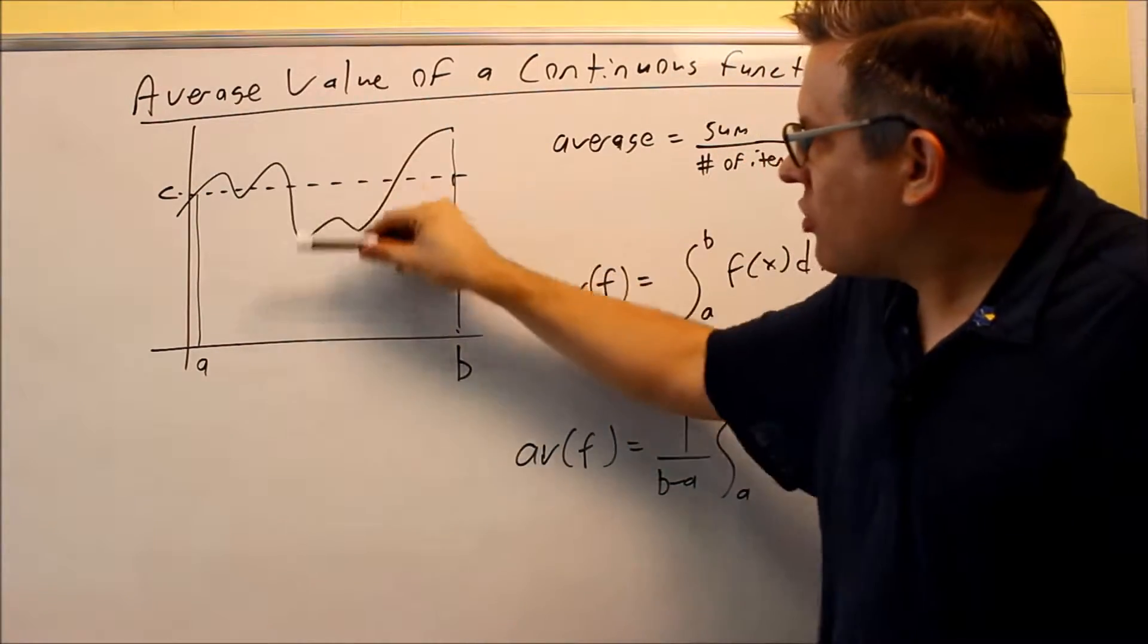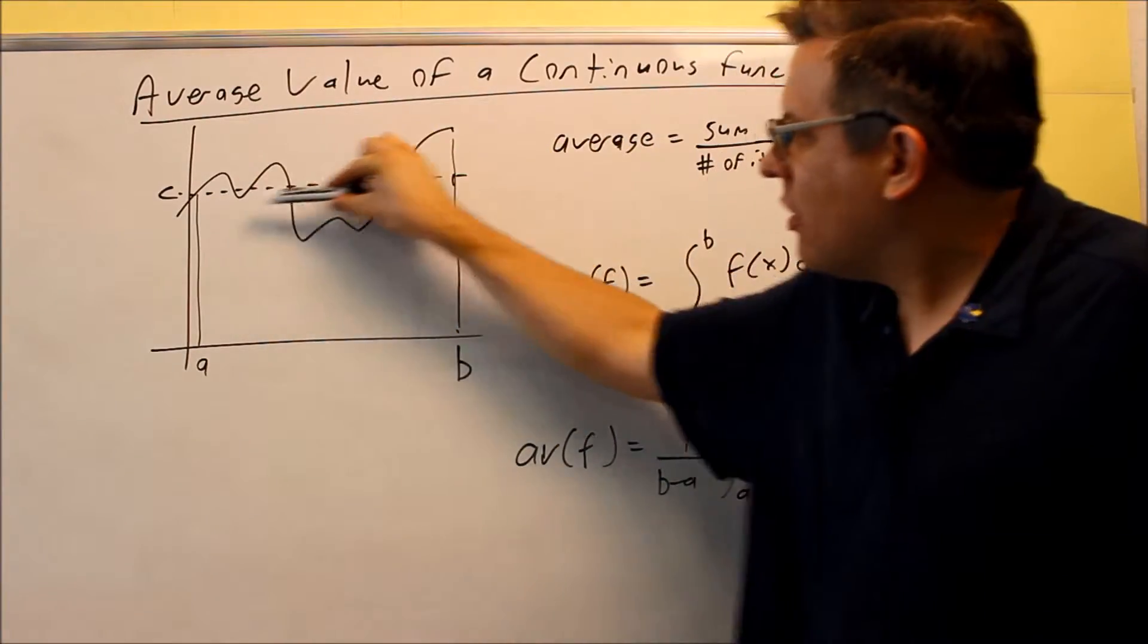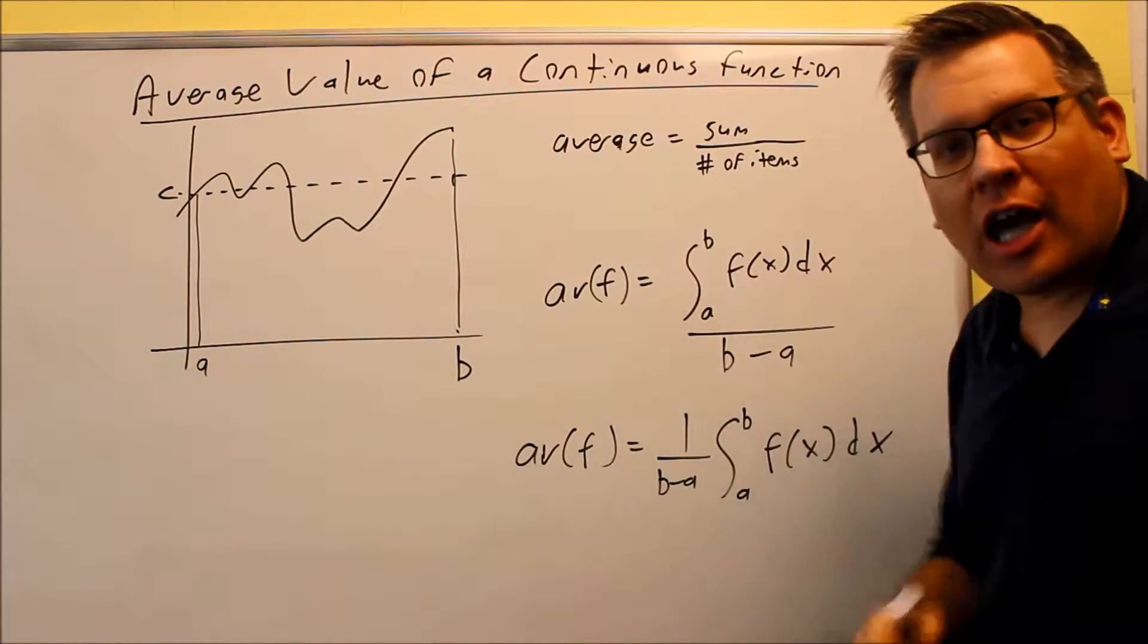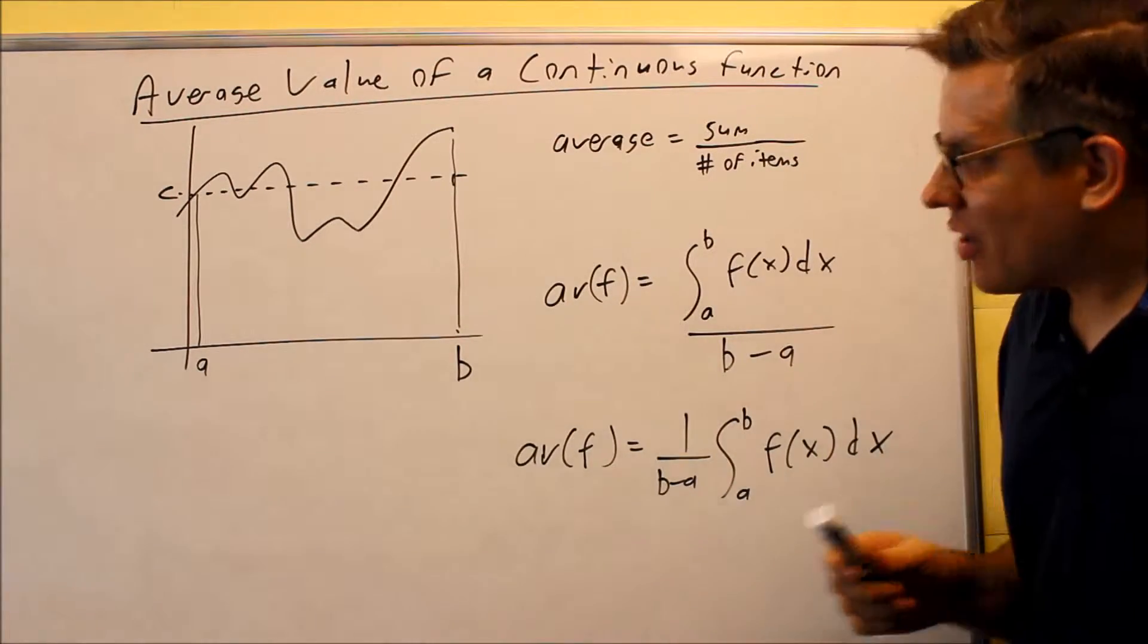So it goes up, goes down, and the dotted line here represents the average value going across. So what is average? Well, average, you're going to add up a bunch of things divided by the total number.